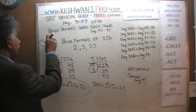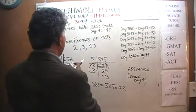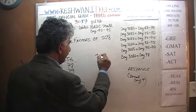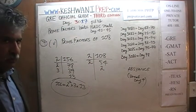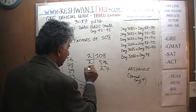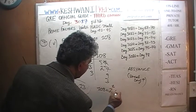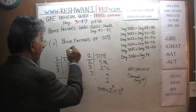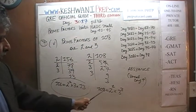Let's do part 5: 108. Dividing by 2: 108 ÷ 2 = 54, ÷ 2 = 27. Now 27 ÷ 3 = 9, ÷ 3 = 3. So 108 is 2 squared times 3 cubed. Therefore, the prime factors of 108 are 2 and 3.